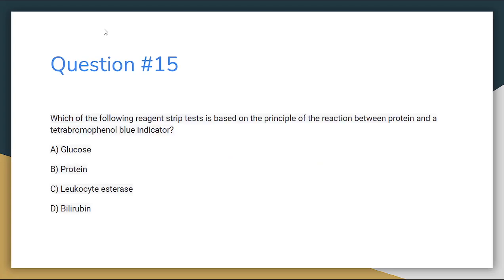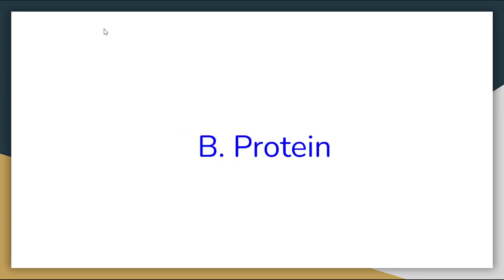Number 15. Which of the following reagent strip tests is based on the principle of the reaction between protein and a tetrabromophenol blue indicator? Letter A: Glucose. Letter B: Protein. Letter C: Leukocyte esterase. Or letter D: Bilirubin. The correct answer for number 15 is letter B, Protein.